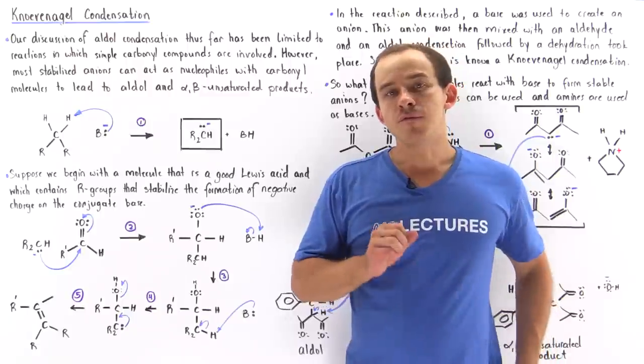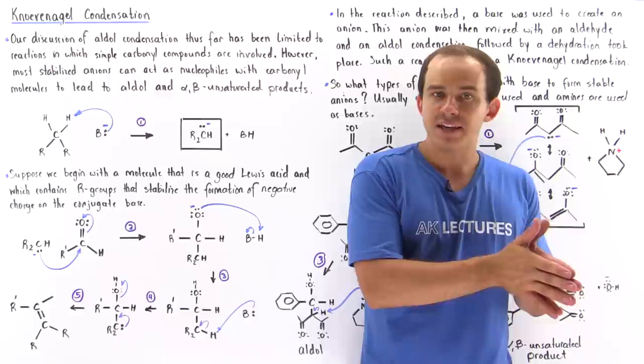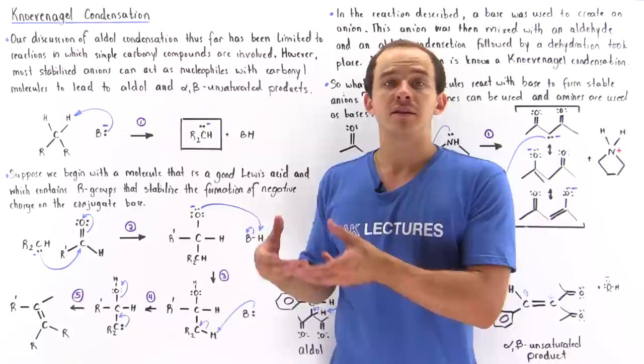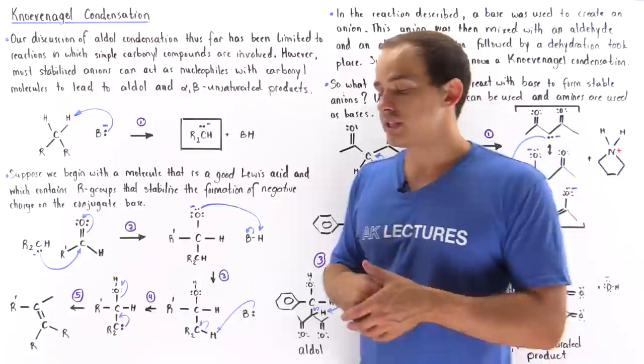So far in our discussion on aldol condensation reactions, we have primarily focused on reactions that are involved between simple ketones and simple aldehydes. But actually, many different types of aldol condensation reactions can take place in which our carbonyl compounds are more complex than simple aldehydes and simple ketones. And this is what we're going to discuss in this lecture.